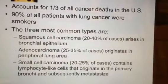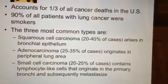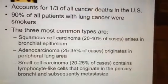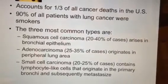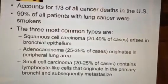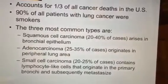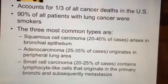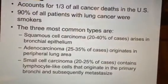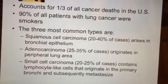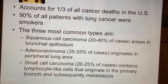Squamous cell carcinoma develops in the bronchial epithelium. The second most common type is adenocarcinoma, at about 25 to 35% of all cases, and it grows from the peripheral lung areas on the outside of the lung. The third type is small cell carcinoma, about 20 to 25% of cases. It consists of lymphocyte-like cells that originate in the bronchi and metastasize pretty quickly.